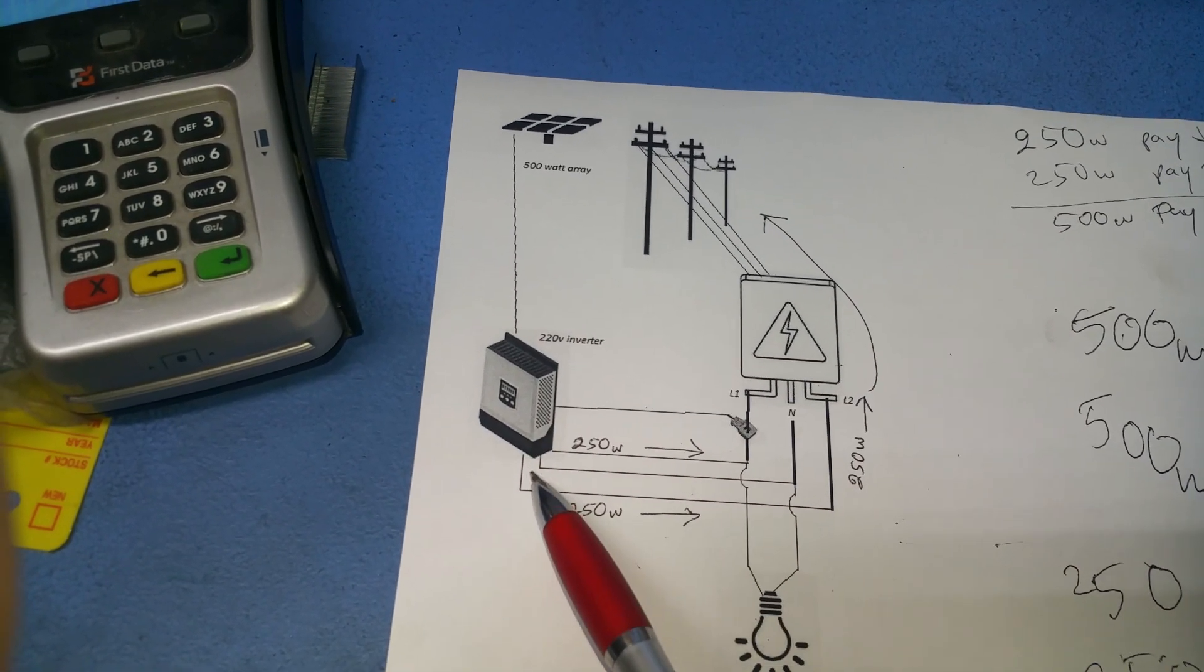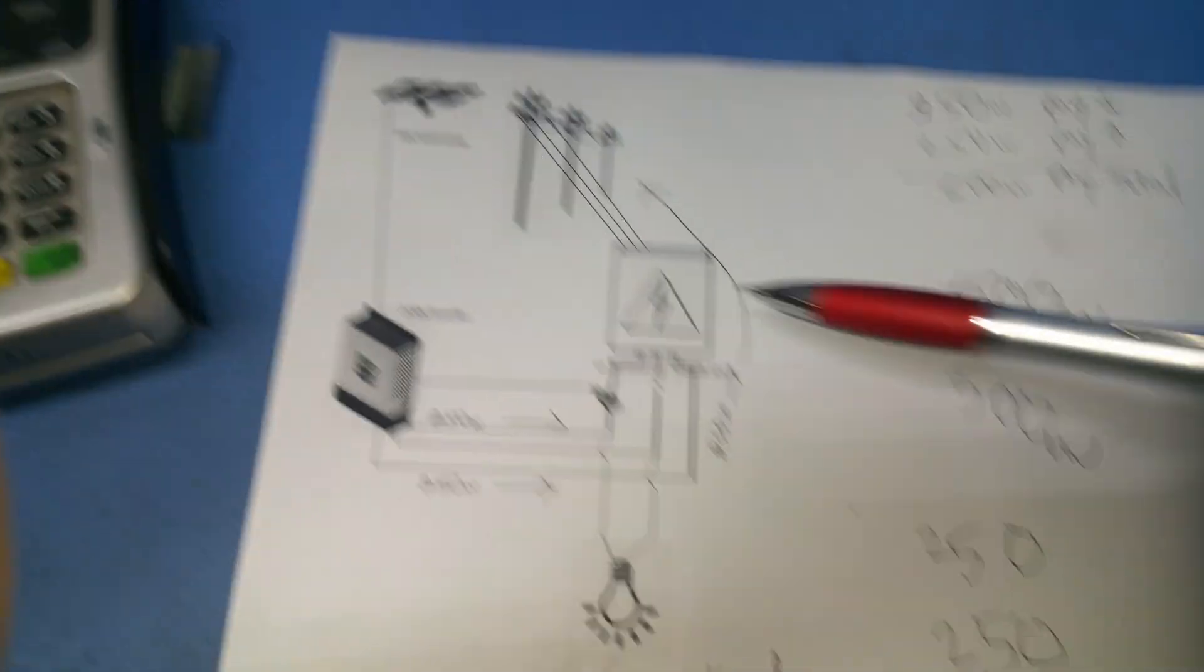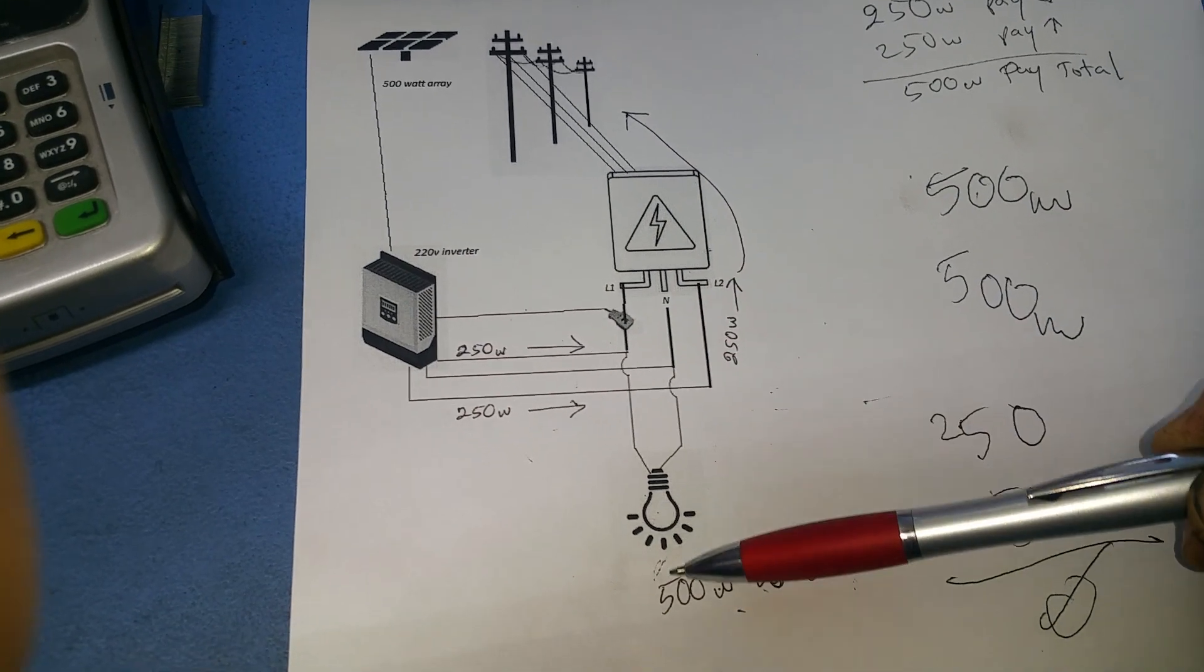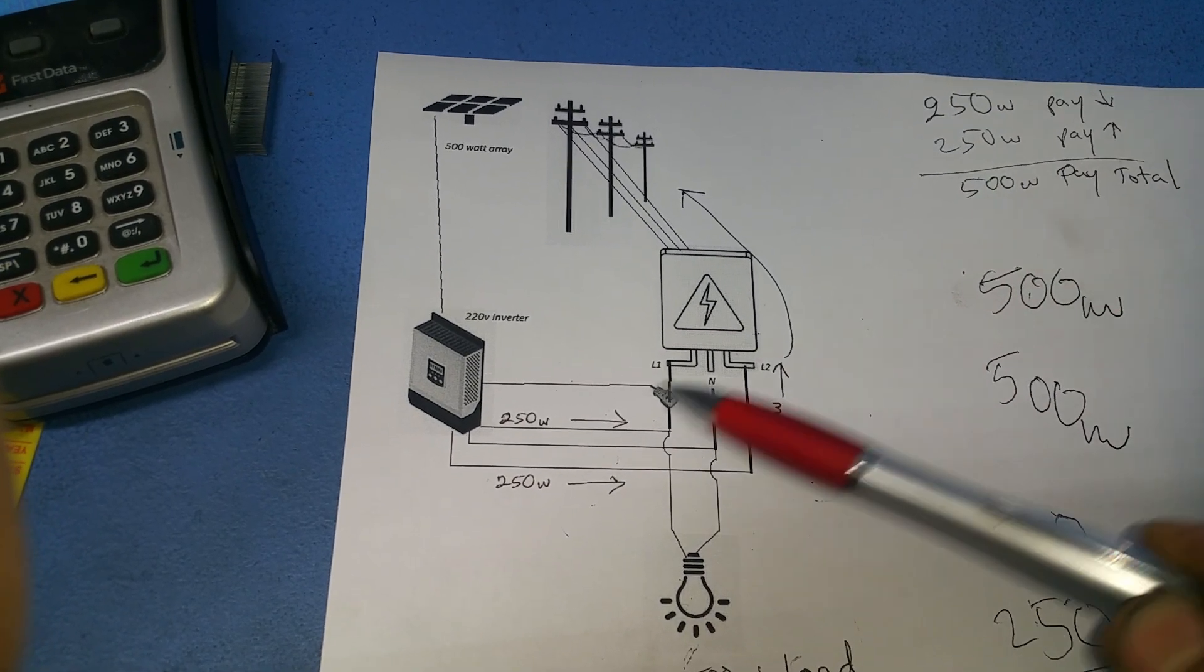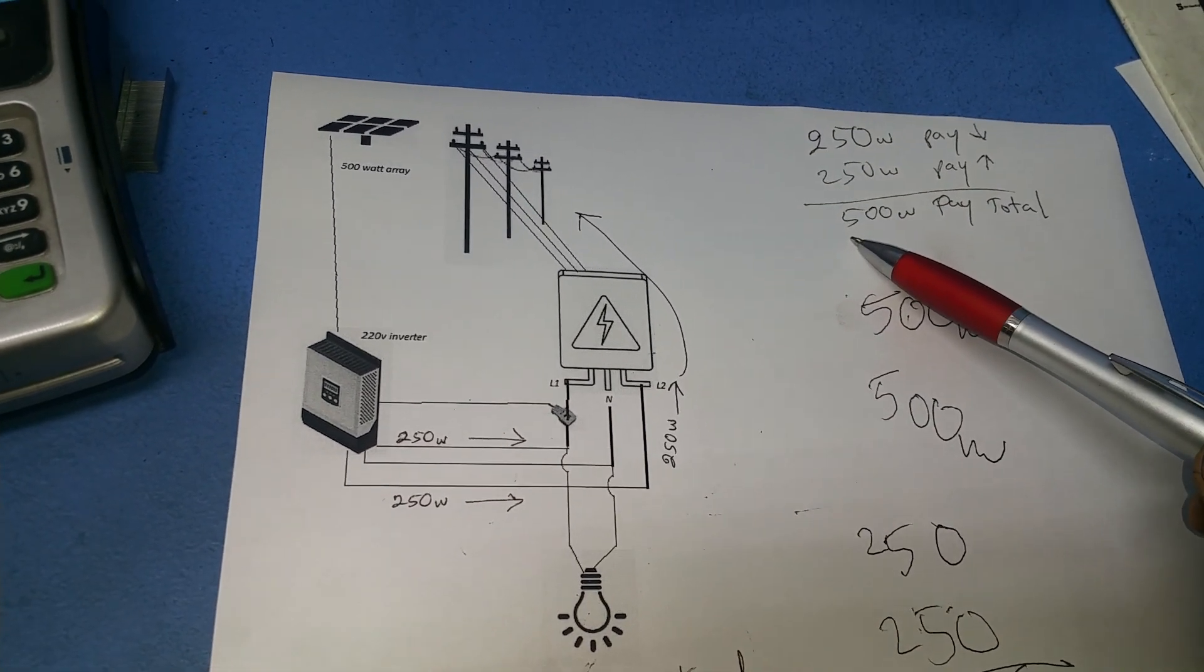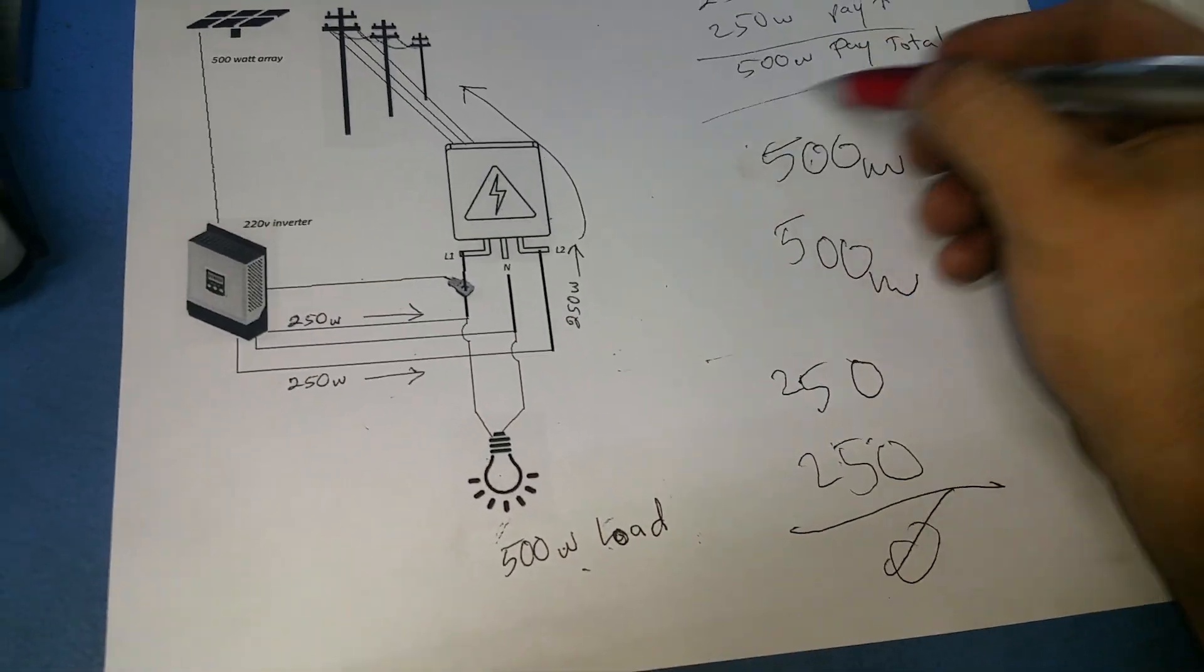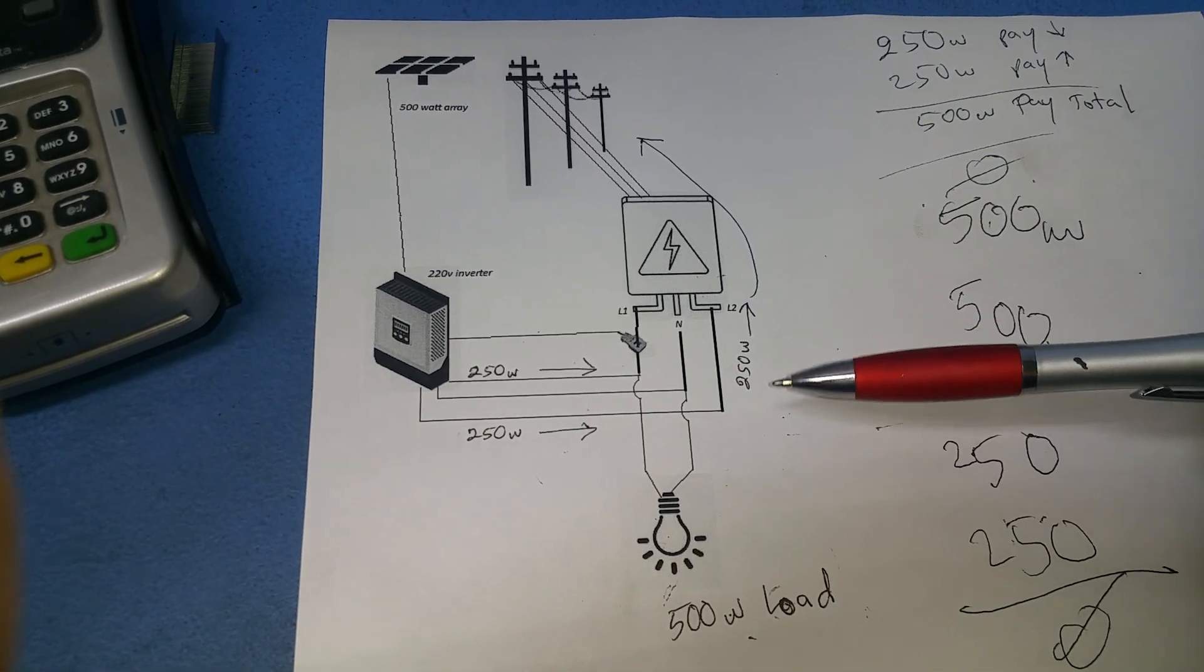My overall summary is I am paying 250 watts through L1 from the grid to power my load, and I'm paying 250 watts through L2 to put it back in the grid. So total I'm paying for 500 watts and my system generates 500 watts, so that leaves me with zero benefit.